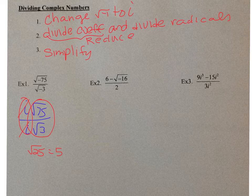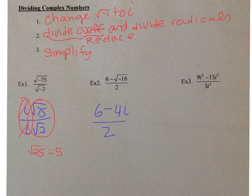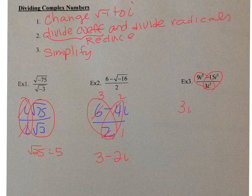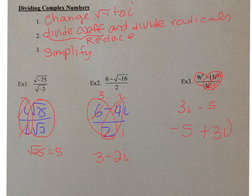Next: 6 minus 4i over 2. You can separate it — 2 goes into 6 three times, into 4 twice, into 2 once — leaving 3 minus 2i. For the last one: 9 divided by 3 is 3; i to the third divided by i squared — subtracting exponents — gives i to the first, which is just i; minus 15 divided by 3 is 5; and i squared divided by i squared is 1, so that drops out. Written in a plus bi form, the answer is negative 5 plus 3i.